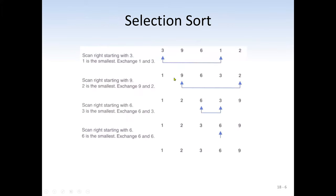Let's see an example sorting five items: 3, 9, 6, 1, 2. These items are not sorted yet. Selection sort says the first thing we do is scan through the list from beginning to end and find the smallest item. We're doing ascending order sorting, so we find that 1 is the smallest. We swap 1 with 3, so 1 is now at the front and 3 takes the previous position of 1.